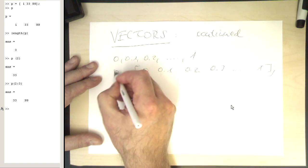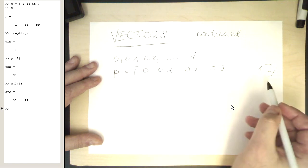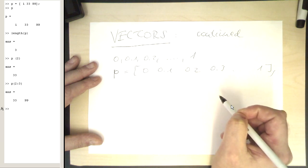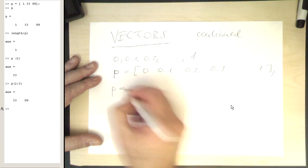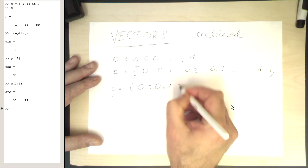Anyone using a proper programming language would use a for loop for this. In MATLAB, MATLAB provides a shortcut for this. You can write 0 and then colon 0.1, colon 1.